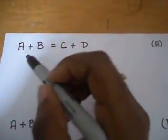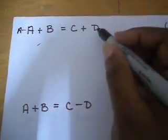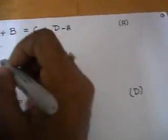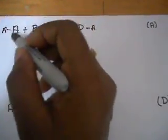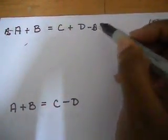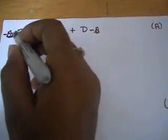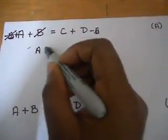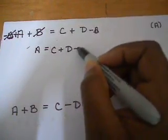Now we have a simple algebra equation. Whatever we do to the left-hand side, we do to the right. If A is added here we're going to subtract A from both sides. We want to isolate A, so we subtract B from both sides, and we're left with A is equal to C plus D minus B.